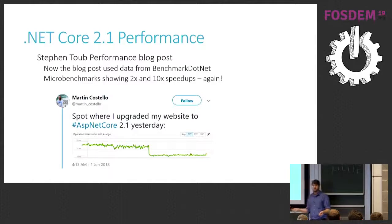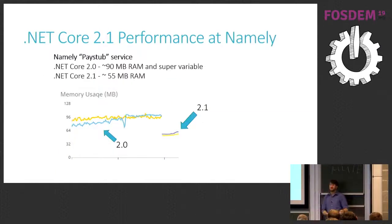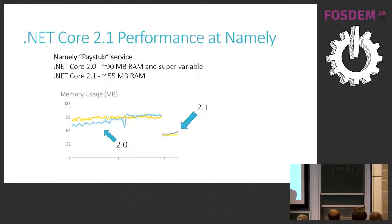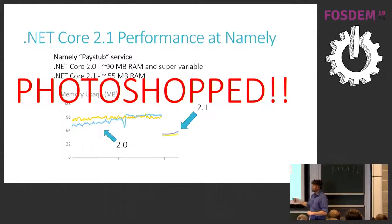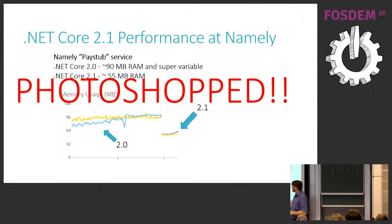We saw tweets like 'I upgraded to .NET Core ASP.NET Core yesterday and the performance is amazing.' I wanted to show a real graph from Datadog. Here's .NET Core 2.0 memory usage for a particular service — around 90 megabytes. .NET Core 2.1 was around 50–55 megabytes. No code changes, just upgrading to 2.1 from 2.0. However, there's a problem — the graph is Photoshopped. The y-axis is correct, but the x-axis is Photoshopped because we had to revert. We couldn't use .NET Core 2.1.